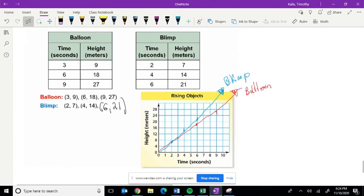Now, in looking at the two graphs, we can determine that the blimp is rising faster than the balloon because its line is steeper than the balloon's.